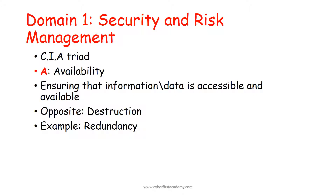The A in the CIA triad stands for availability. Availability simply means ensuring that information is accessible. For instance, an online business like Amazon wants its site to be up at all times — if the site is down they lose a lot of money, so it needs to be always online and easily accessible.